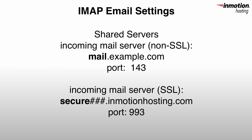The incoming mail server is normally based on the domain name, so if your domain name is example.com, the incoming mail server would be mail.example.com. If you want to use secure settings for a shared server account, then type in secure.servernumber.inmotionhosting.com. The server number will depend on what your server number is, so if your server is ecbiz123, then what you need to type in is secure.123.inmotionhosting.com.